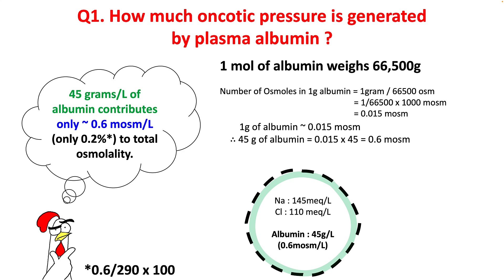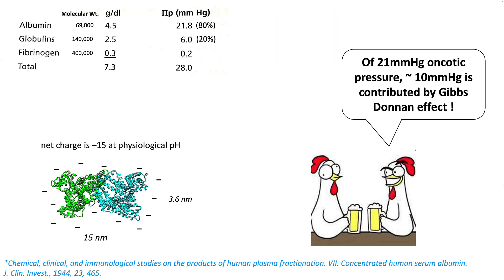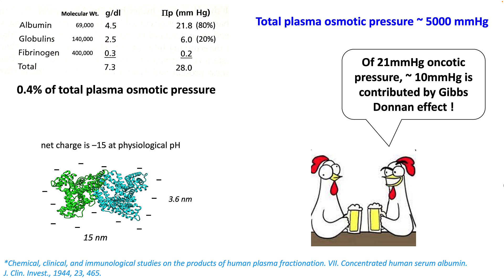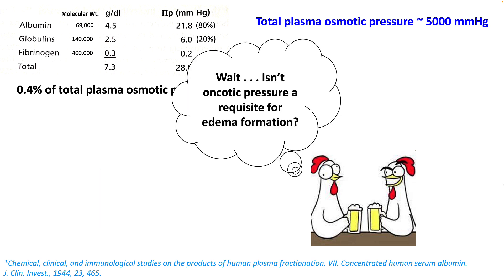Since serum osmolality is about 290, albumin contributes only 0.2% of total plasma osmolality. The oncotic pressure contribution is slightly higher because of the negative charge on albumin — due to the Gibbs-Donnan effect, the oncotic pressure contributed is about 21 mmHg. This is about 0.4% of total plasma osmolality pressure, which is approximately 5,000 mmHg. So albumin's contribution to oncotic pressure is very low, and there is more to this molecule than meets the eye.